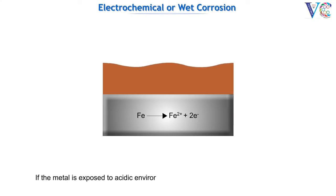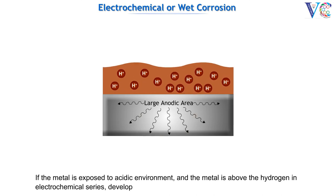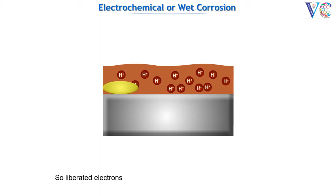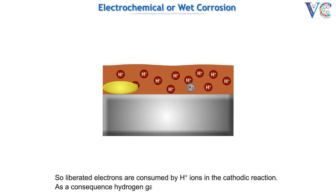If the metal is exposed to an acidic environment and the metal is above hydrogen in the electrochemical series, a large anodic area and small cathodic area develop. The liberated electrons are consumed by H+ ions in the cathodic reaction, and as a consequence, hydrogen gas is evolved.